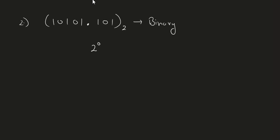10101.101 in binary form. Now a little change in rule. The point on the right side has the same thing. When we go to the left side from the point, we will be positive powers: 2 raised to power 0, plus 2 raised to power 1, plus 2 raised to power 2, plus 2 raised to power 3, plus 2 raised to power 4. When we go to the right side of the decimal point, we will be negative: 2 raised to power minus 1, plus 2 raised to power minus 2, plus 2 raised to power minus 3.